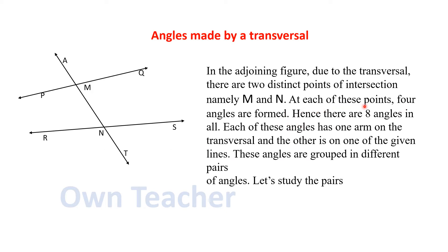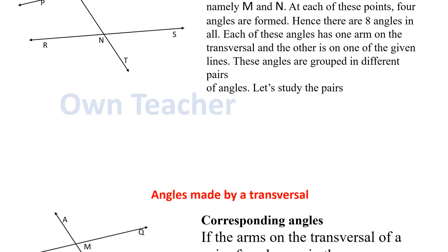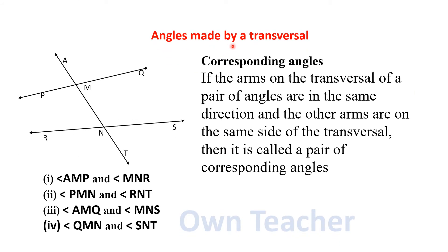At each of these points, four angles are formed. Each of these angles has one arm on the transversal and the other arm on one of the given lines. These angles are grouped into different pairs of angles.